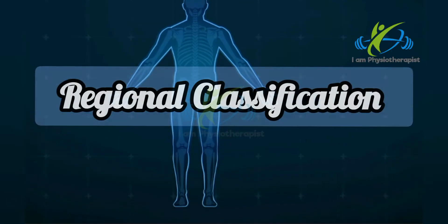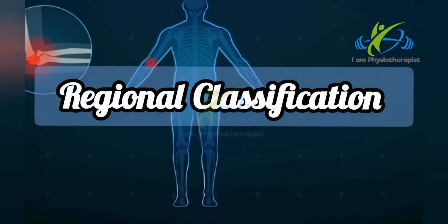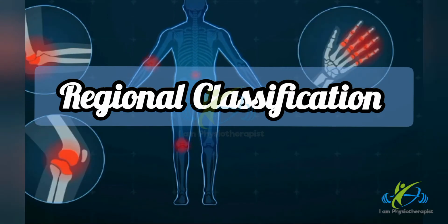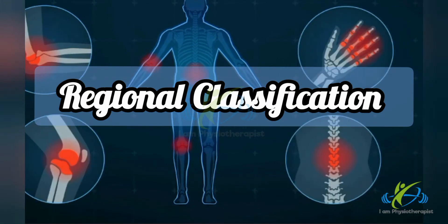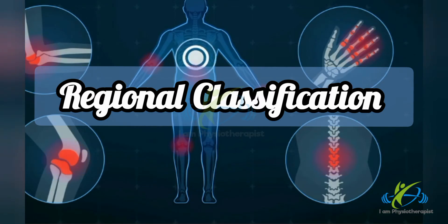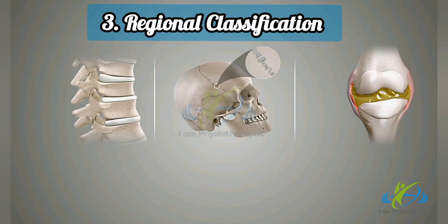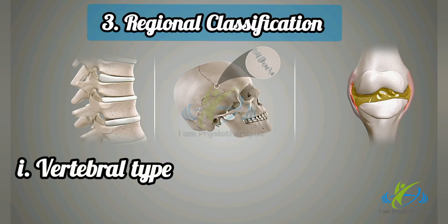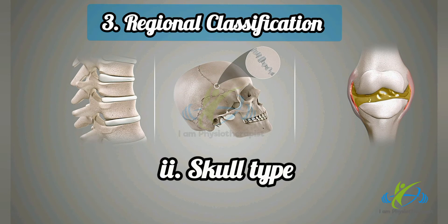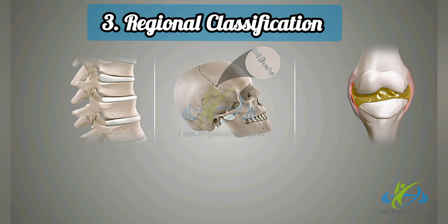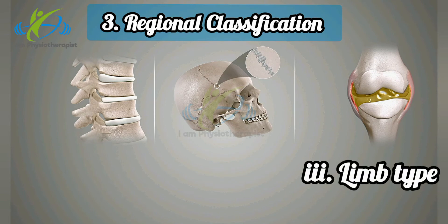Regional classification. According to regional classification, joints are classified into three types: vertebral type, which are slightly movable joints; skull type, which are movable joints; and limb type, which are freely movable joints.